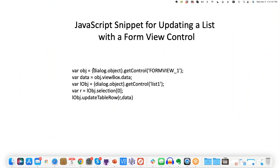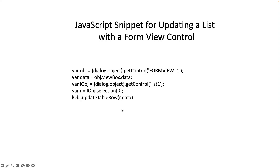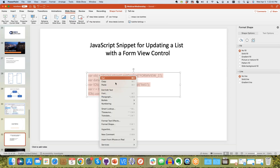I'm creating another variable that contains the data in that form view object. Then I'm finding the list control, grabbing a pointer stored as 'lobj' (list object), and setting a variable 'r' equal to the list object's selection — basically the first selected row. Then I'm telling it to update the table row with the data I entered in the form view control. I'm going to paste that code directly into the chat so you can grab it.